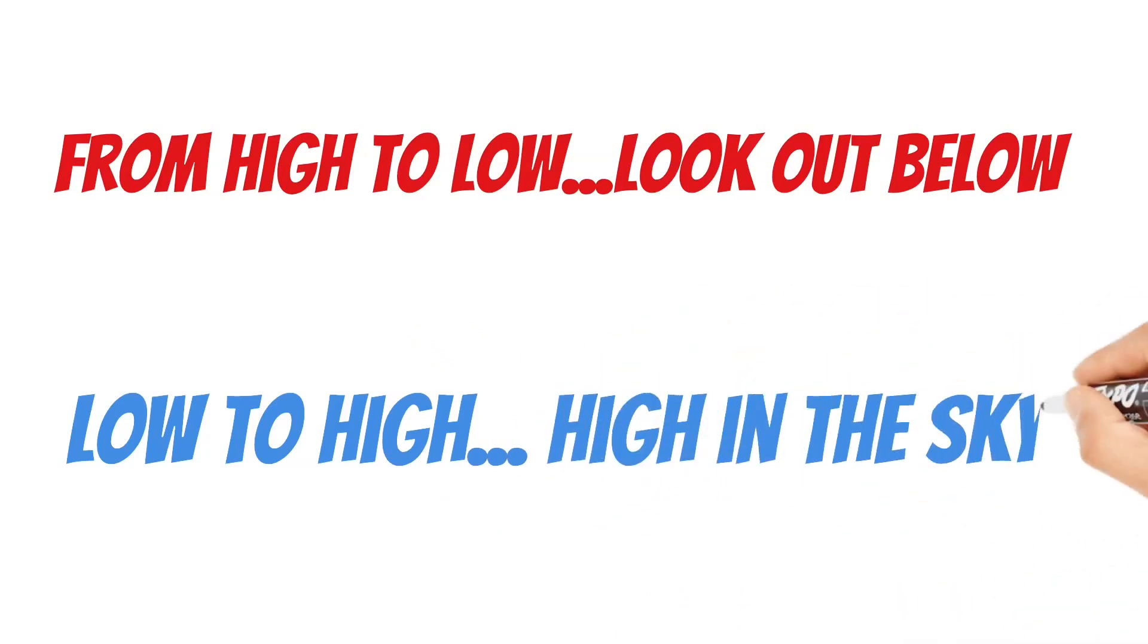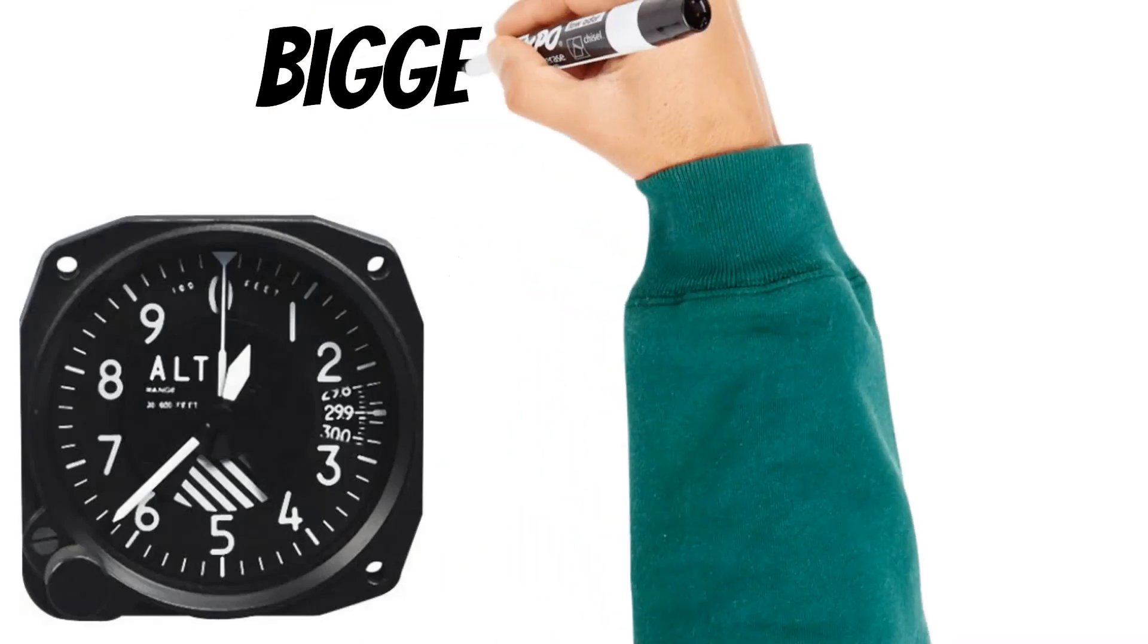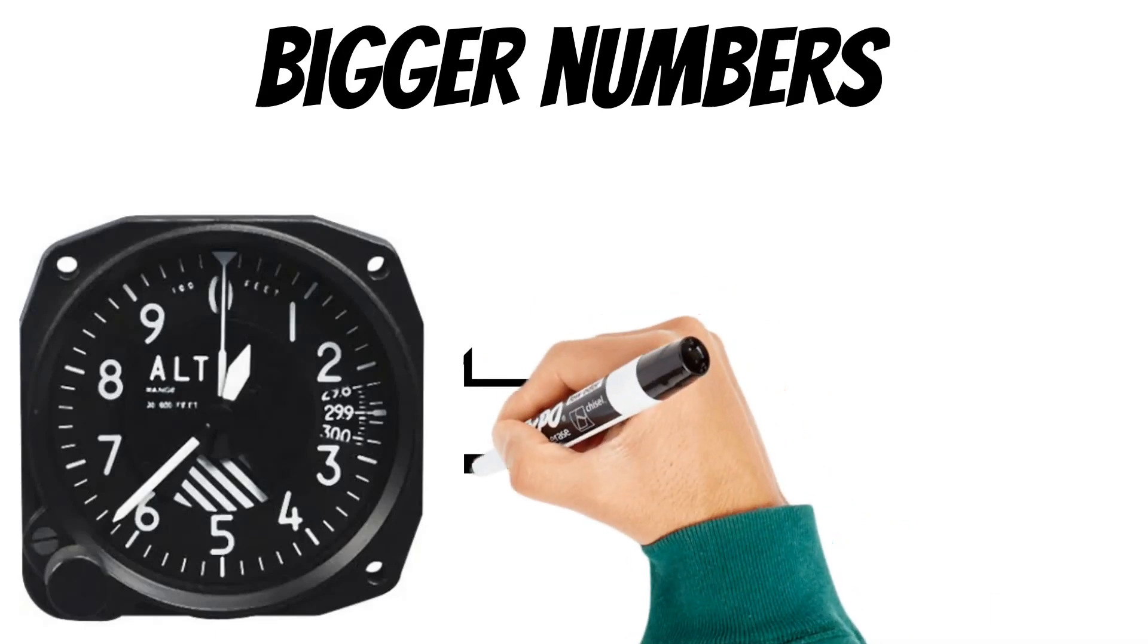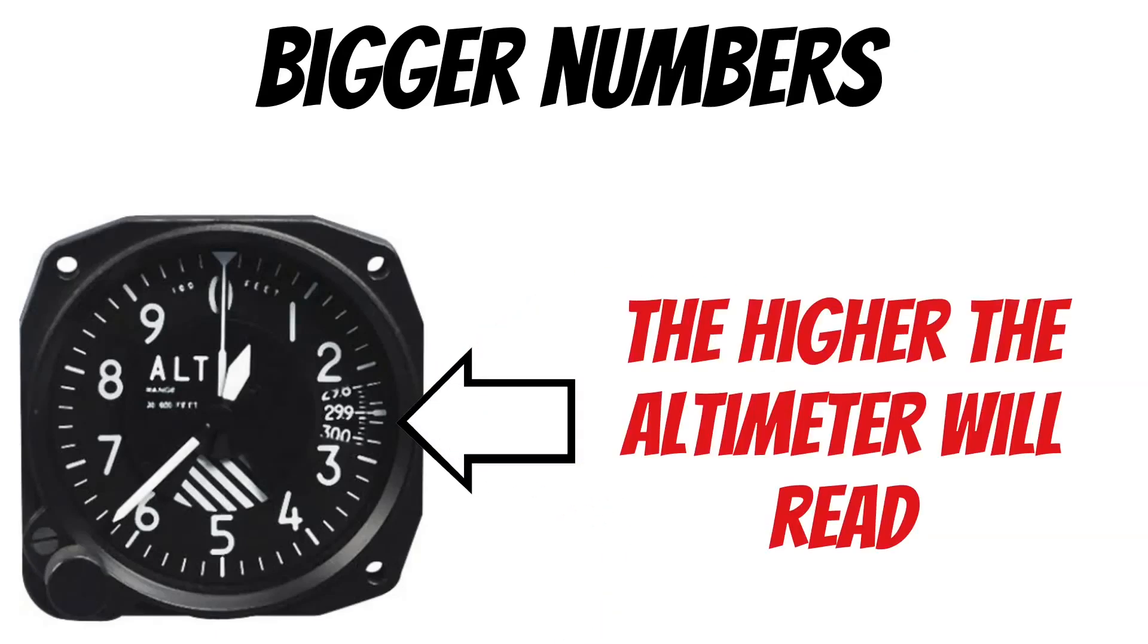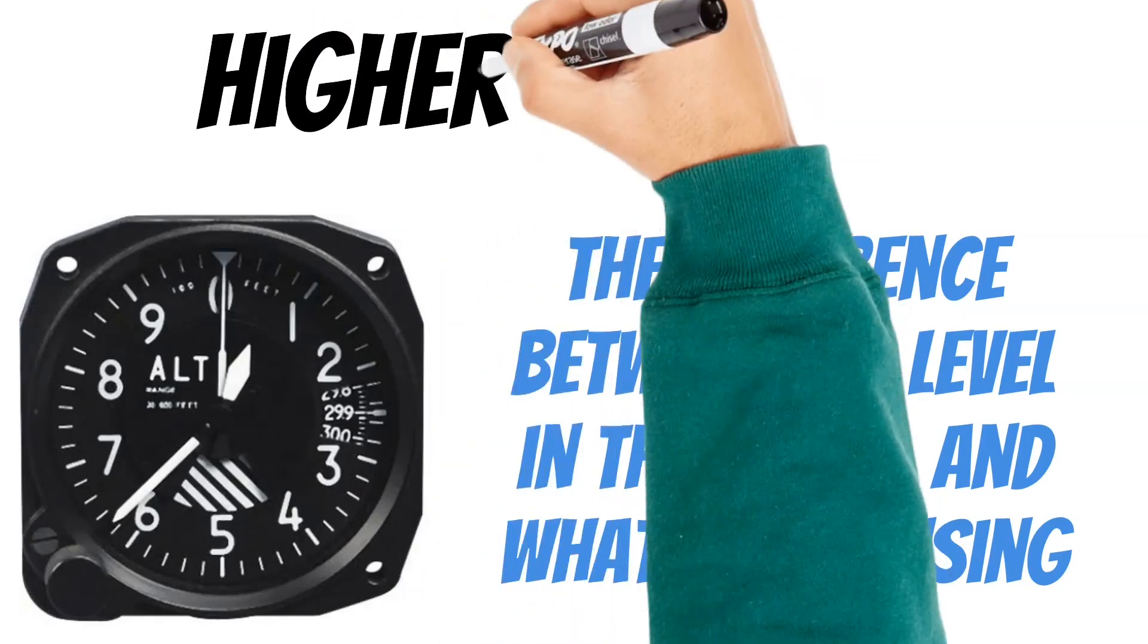Before we leave here today, I want to leave you with one more important piece of information that might end up being a test question. The bigger the numbers that you put here in the Kollsman window, the higher the altimeter will read. And that's because it's taking the difference between where you tell it sea level is in that area and what it's sensing. The higher the pressure is at sea level, the bigger the difference will be between that and what the altimeter is sensing. And that means you'll be at a higher altitude.